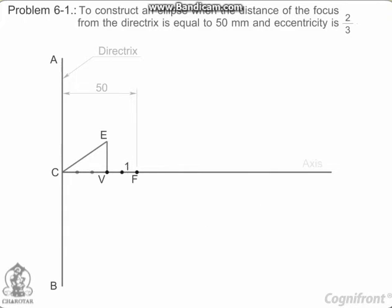Mark any point 1 on the axis and through it, draw a perpendicular to meet CE produced at 1 dash. With centre F and radius equal to 1-1 dash, draw arcs to intersect the perpendicular through 1 at points P1 and P dash 1.